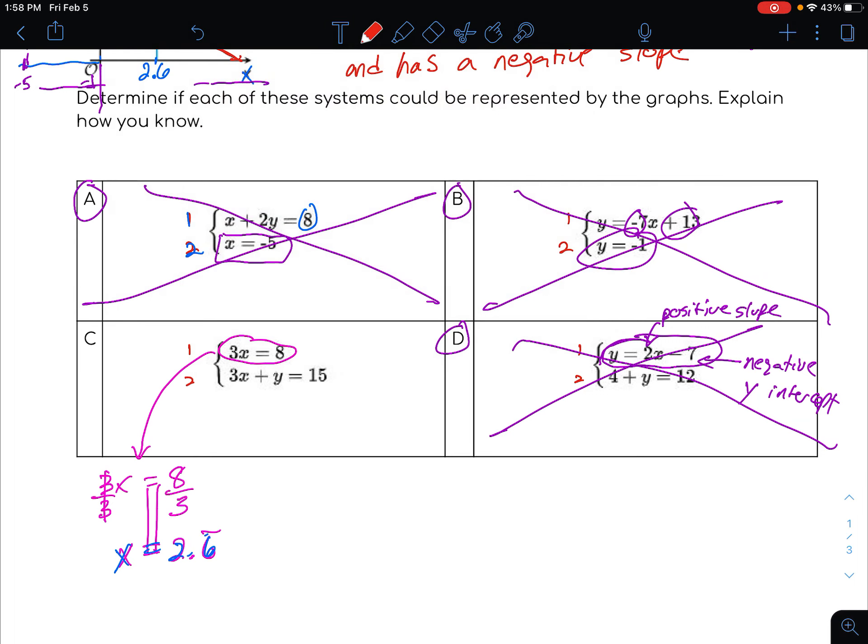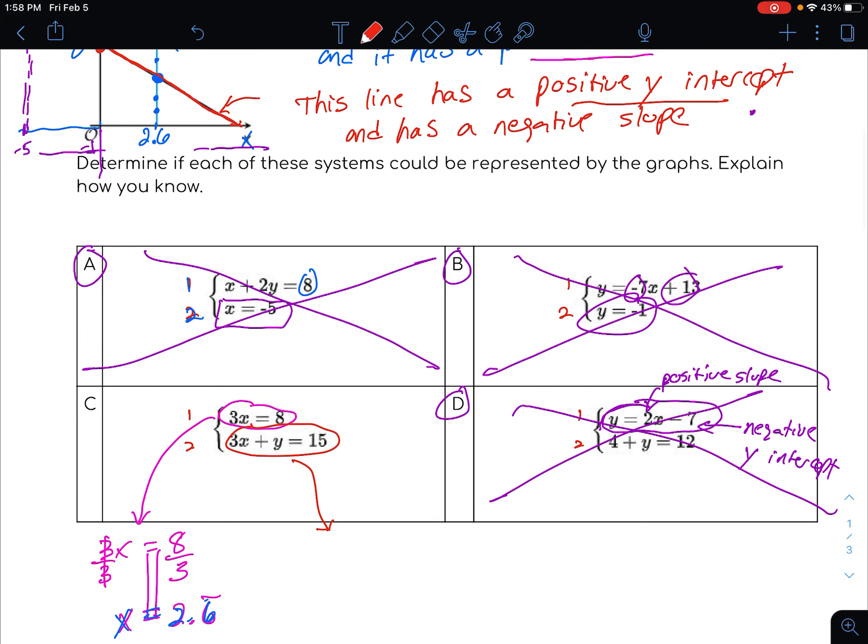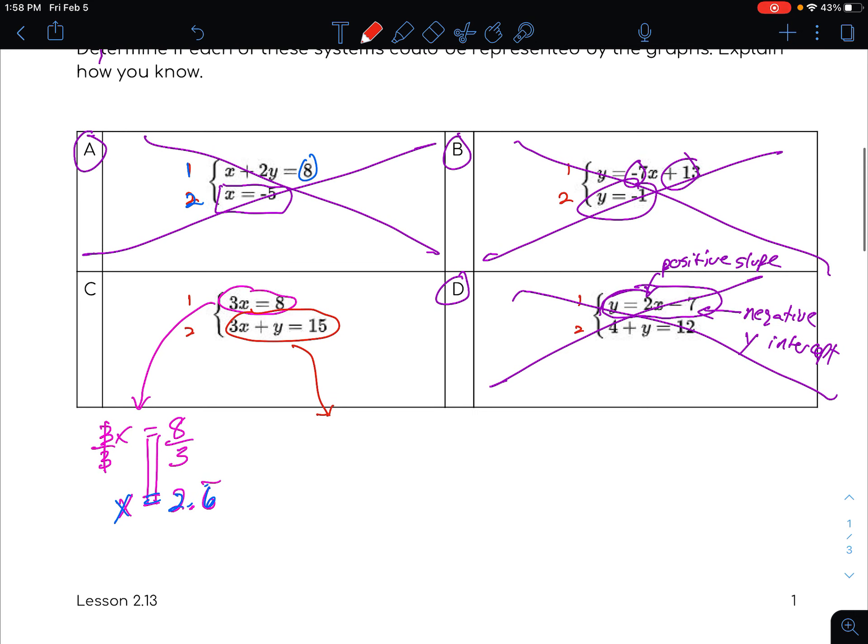Let's look at the second one, the second line right here. I know that my second line has to have a positive y-intercept and a negative slope. So let's get that into y equals mx plus b form and see what we get. So 3x plus y equals 15. If I want to get y by itself, so it's in y equals mx plus b, I'm going to move that whole 3x over to the other side by subtracting the whole thing over to the other side. So it cancels out that. So now I have y equals 15 minus 3x.